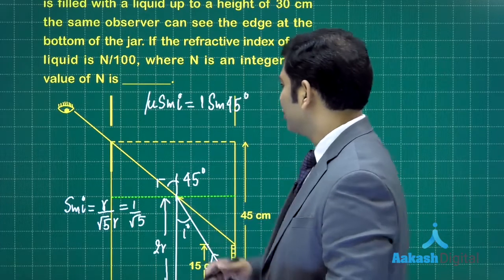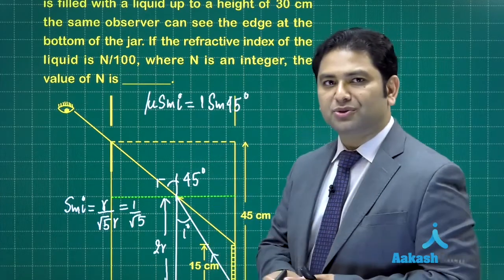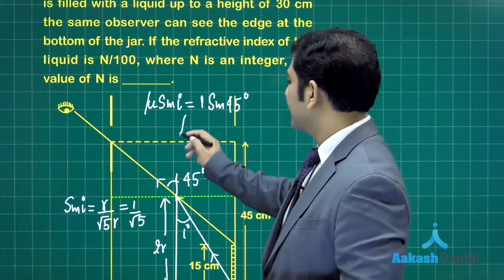Sine i is 1 by root 5, sine 45 is 1 by root 2, so you would be getting the value of μ as 1.58, the refractive index.